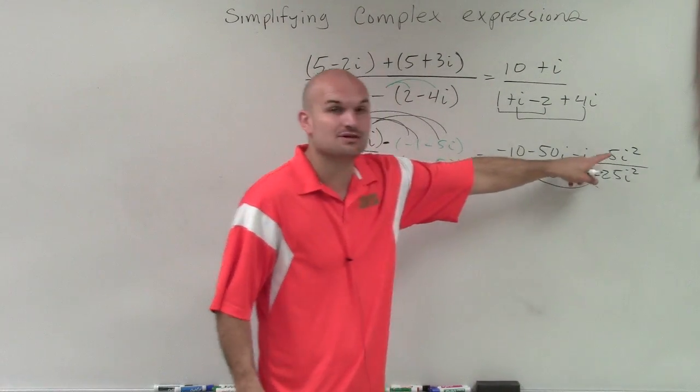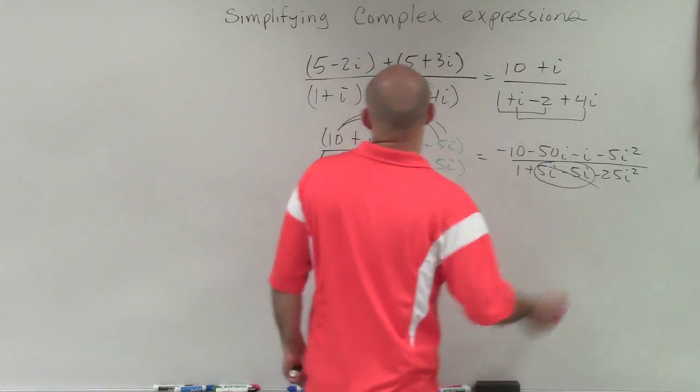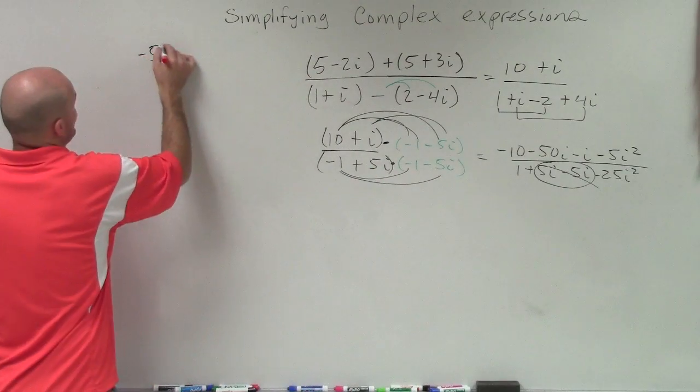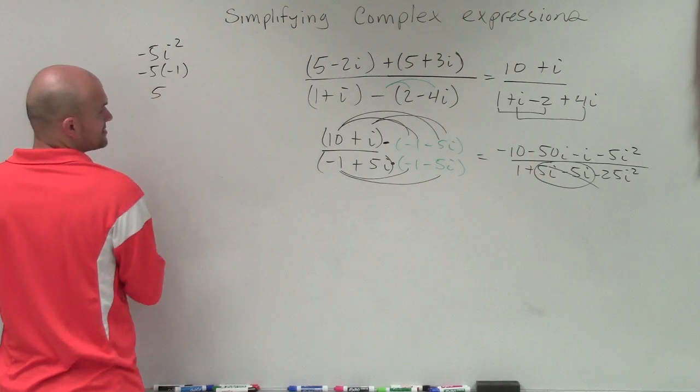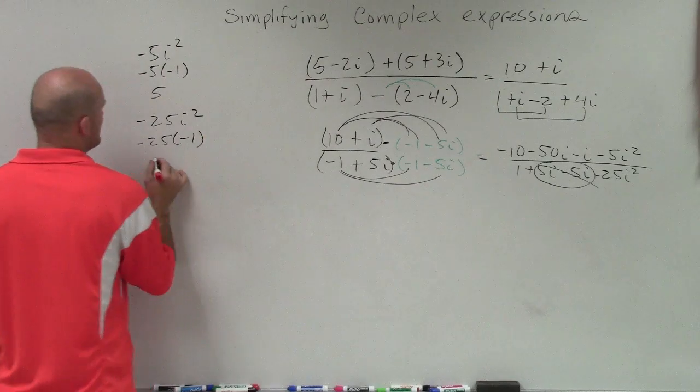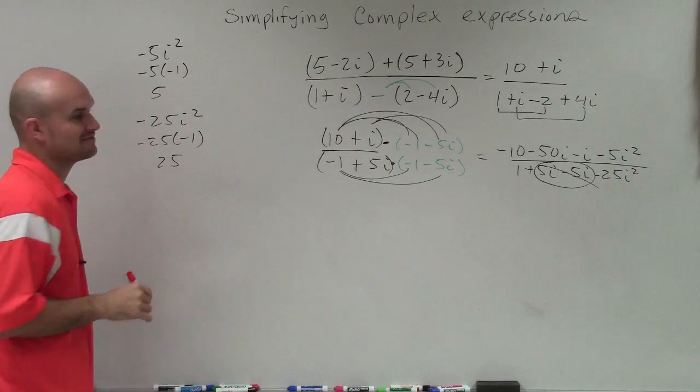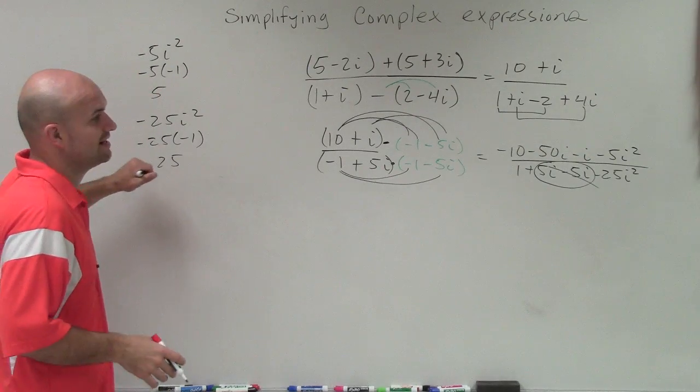Now what we need to look at is how we're going to simplify this. And also remember that i squared can represent it as -1. So we're going to want to rewrite these two terms. So I have -5i squared, which would be -5 times -1, which is positive 5. And then I have -25i squared, which is -25 times -1, which equals positive 25.